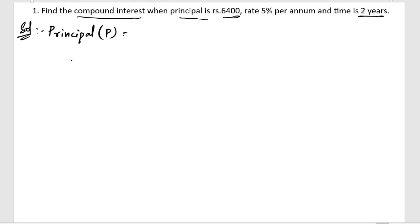P is equal to rupees 6400. After this we are having the rate of interest, so we can write rate, rate equals 5%, so 5% per annum